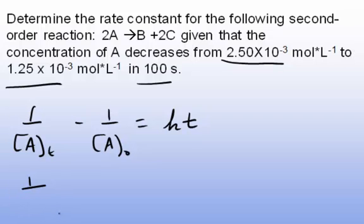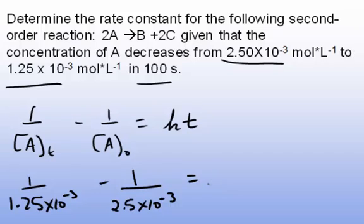1/(1.25×10⁻³ M) minus 1/(2.5×10⁻³ M) equals k times 100 seconds, that's the time that has elapsed.